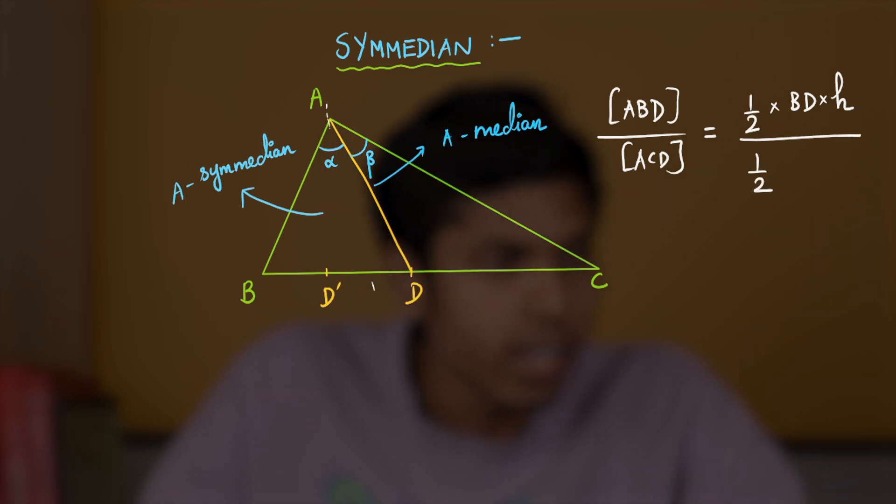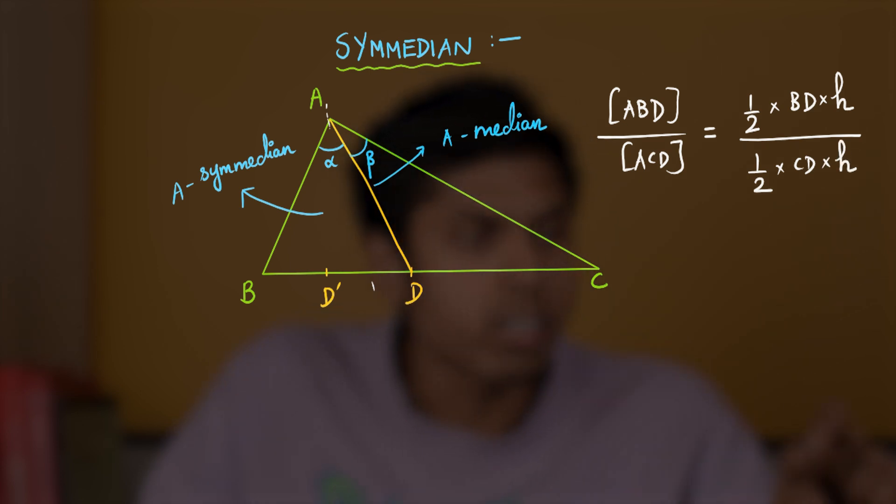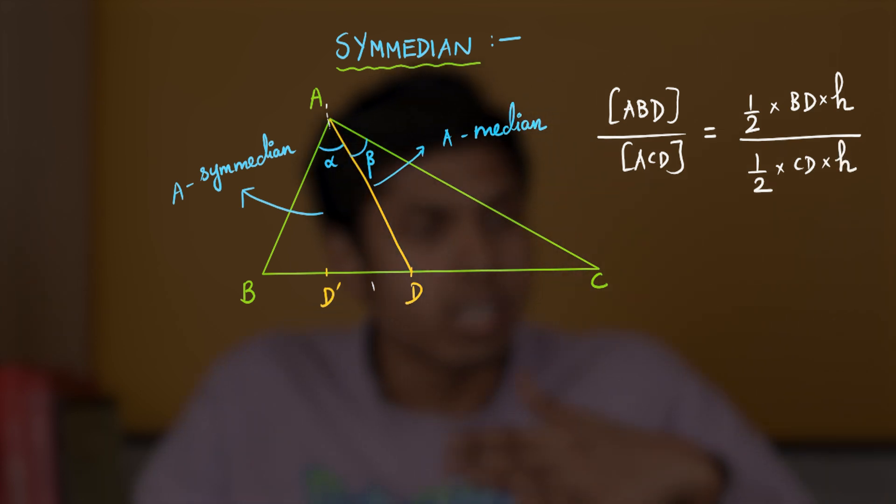Similarly, the area of ACD will be half CD times H. They both share a common height because they have the same baseline and the vertex is also shared between them. Therefore, the height will also be equal.